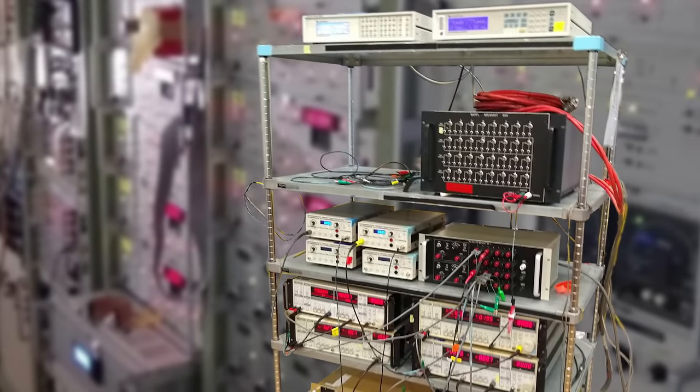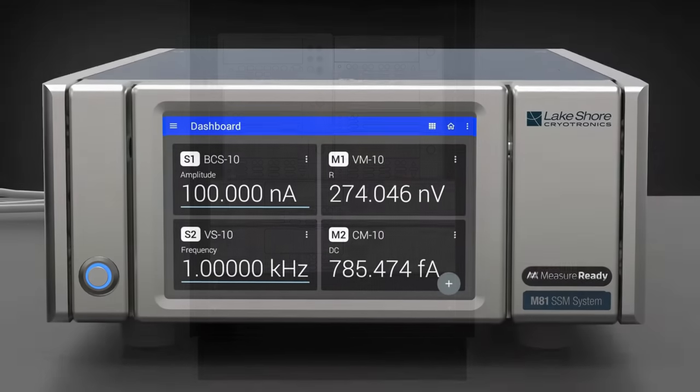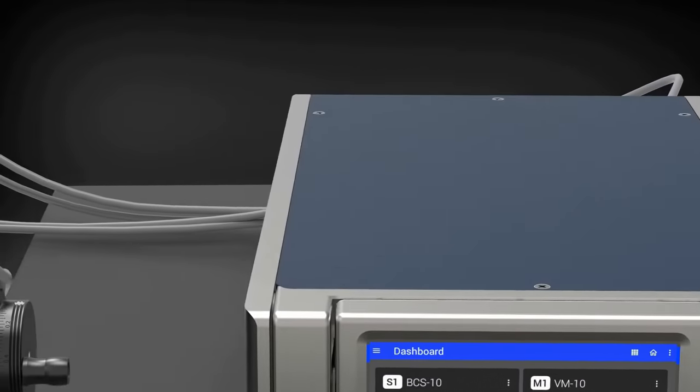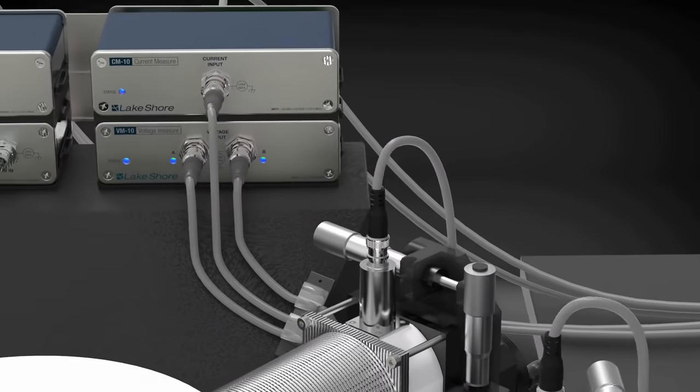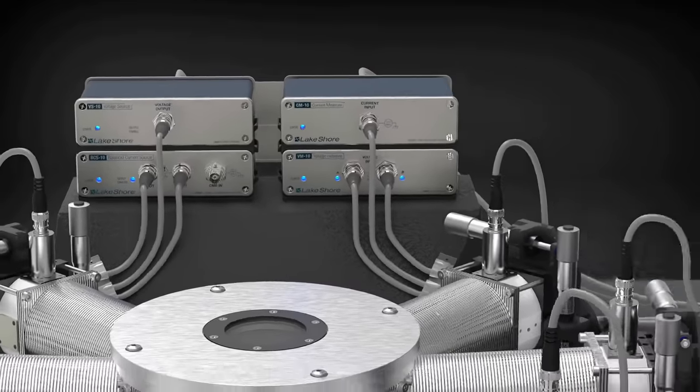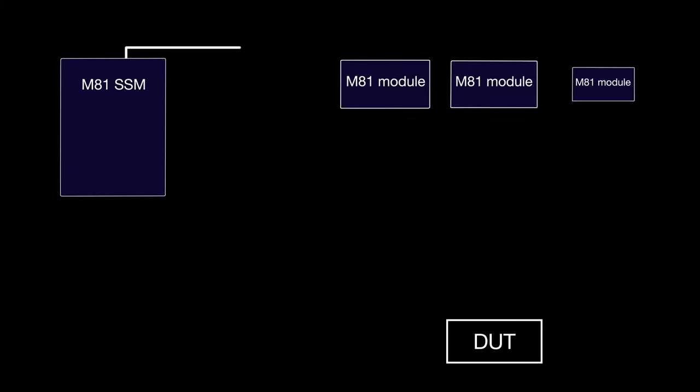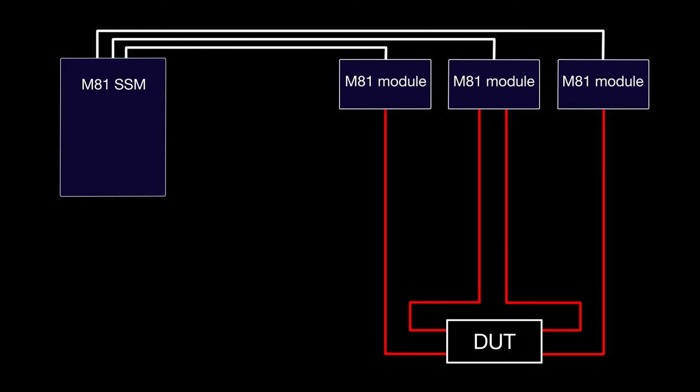Typical mixed-vendor instrumentation setups can be complex to operate and may also be compromising the quality of your measurements. The Model M81 SSM provides a unified, modular approach to multi-channel sourcing and measurement and allows up to six channels of source and measure amplifier modules to be remotely mounted from the instrument, providing flexibility and bringing the sourcing and measurement much closer to the sample or device under test.